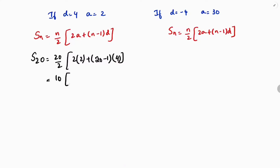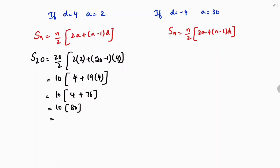So the sum of 20 terms for Case 1 (a = 2, d = 4) is 800. Let's verify using the second set of values — we should check if we also get 800 for the other case.